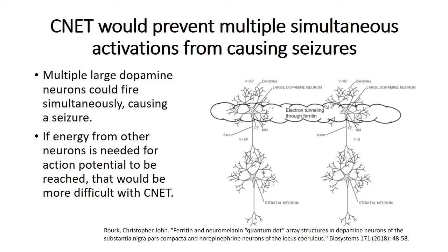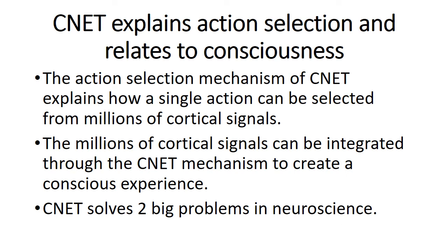Because it has been established that these large dopamine neurons code action selection, there must be some mechanism that prevents conflicting coded actions from being selected simultaneously. If multiple large dopamine neurons fire at the same time in response to conflicting cortical signals, that could result in a seizure — such as if one set of signals says to run left and another says to run right, or one says to take a donut from the buffet and another says to take the fruit. CNET provides a mechanism to prevent such conflicting signals from resulting in a seizure by directing energy to the neuron or neurons receiving the most stimulation, and by having neurons require that energy in order to reach action potential. The CNET mechanism thus explains how millions of different cortical signals can result in a single action being selected.